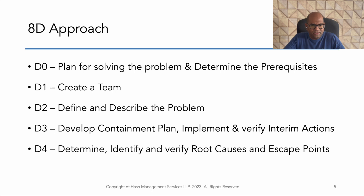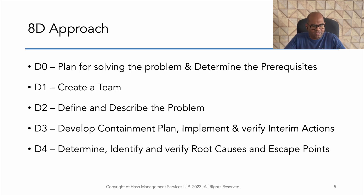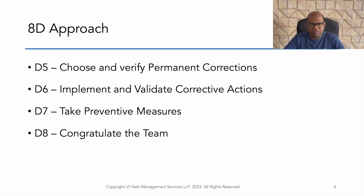D1 is creating the team. D2 is to define and describe the problem. D3 is to develop a containment plan, implement and verify interim action. D4 is to determine, identify and verify root causes and escape points. D5 is to choose and verify permanent correction. D6 is to implement and validate the corrective action. D7 is to take preventive measures.